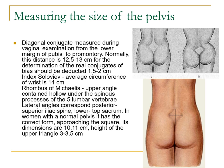For the determination of the true conjugate, 1.5 to 2 centimeters should be deducted. That is your index soloviette — the average circumference of your wrist is 14 centimeters. Your rhombus of Michaelis: the upper angle is contained under the spinous processes of the fifth lumbar vertebra, and the lateral angles correspond to the posterior superior iliac spine. The lower top is the sacrum. In women with a normal pelvis, it has the correct form approaching a square, with dimensions of 10 to 11 centimeters. Height of the upper triangle is 3 to 3.5 centimeters.